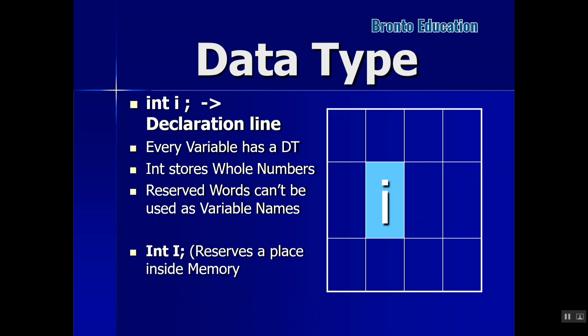The declaration line 'int i' reserves a memory location named i and specifies it stores an integer type — 4 bytes, which is 32 bits. Every variable has a data type; for example 'int x' or 'char x' where char means character. Integer stores whole numbers. Reserved words like 'main', 'if', 'else' cannot be used as variable names — they are keywords. 'int i' reserves a place in memory.